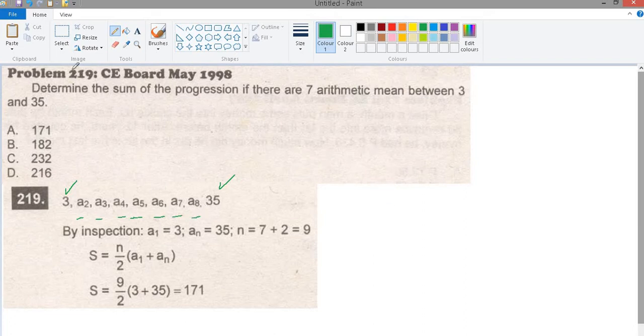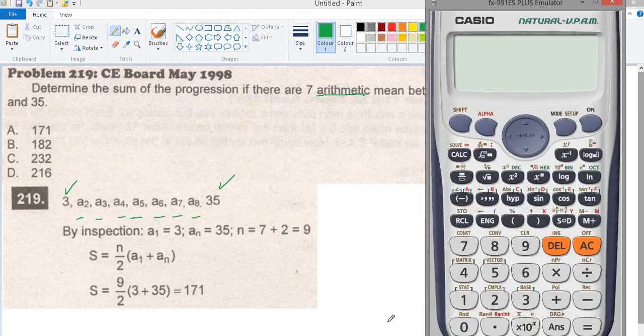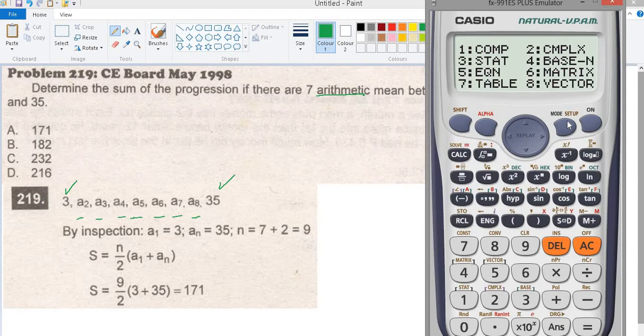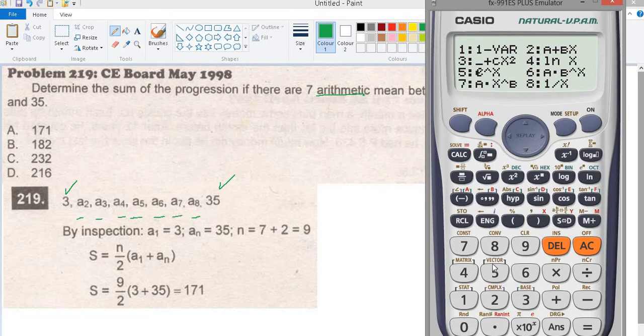First for the calculator technique, we will need to find the common difference. This is arithmetic sequence, so go to statistics, mode 3, start, then use number 2, a plus bx.